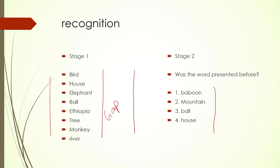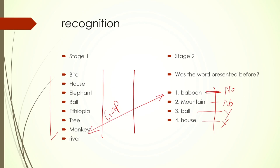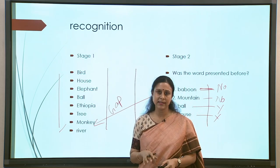In stage 2 of recognition, we give participants a list and ask whether a specific word was present before — presented one word at a time. For example, if 'baboon' comes here and we had 'monkey' in the original list, even though they are not the same thing, there will be a slight time lapse to say 'no' due to their semantic connection. This is a 'no' question. These are the kinds of semantic variables that can be built into the design.